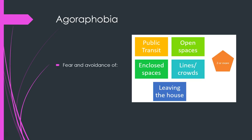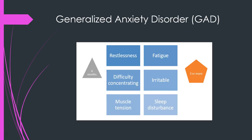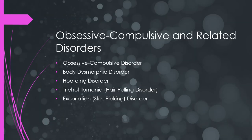Agoraphobia is fear and avoidance of at least two of the following: public transit, open spaces, enclosed spaces, lines or crowds, or leaving the house. Generalized anxiety disorder is also quite common and is often assessed using the GAD-7 diagnostic tool. It must last at least six months, and you need to experience at least three of: restlessness, fatigue, difficulty concentrating, irritability, sleep disturbances, and muscle tension.